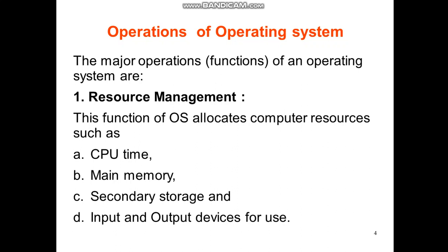Now, what are the different operations performed by the operating system? The first is resource management. As shown on the diagram, various resources are present. The main function of the operating system is to allocate computer resources such as CPU time, that is processor time, main memory, secondary storage, and input and output devices for use.